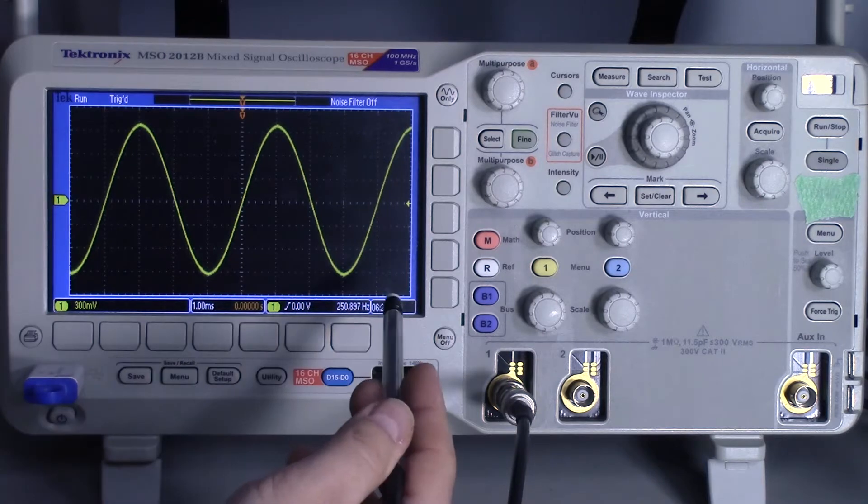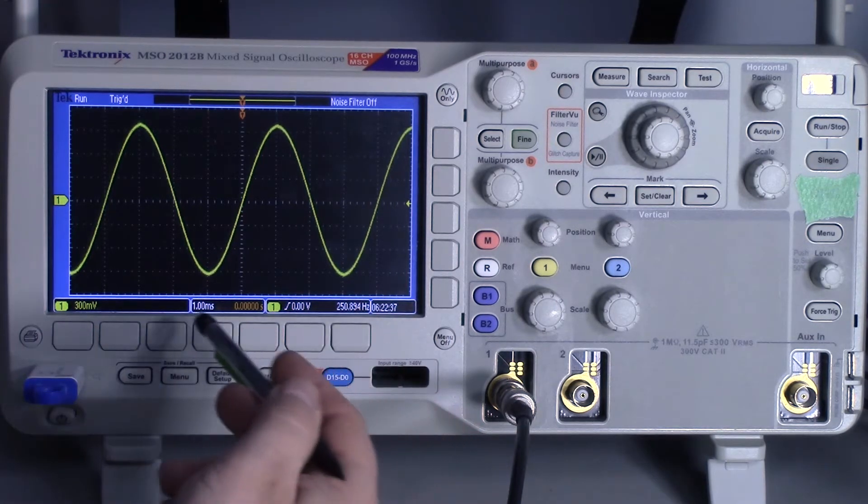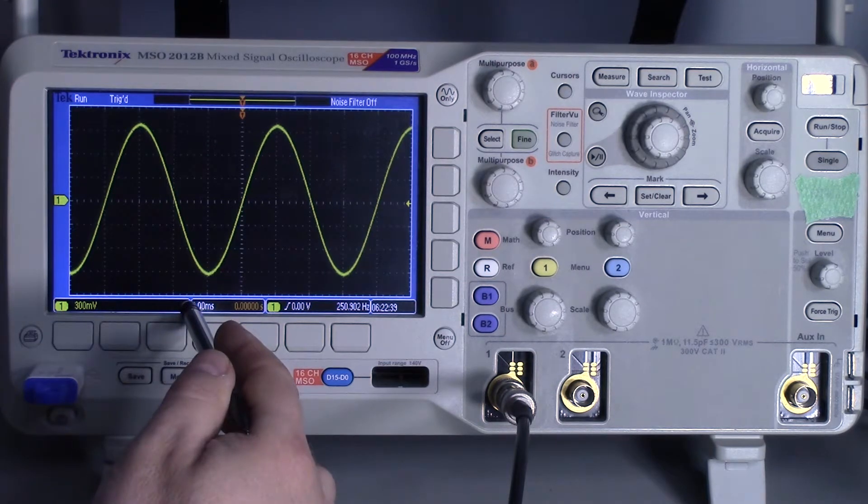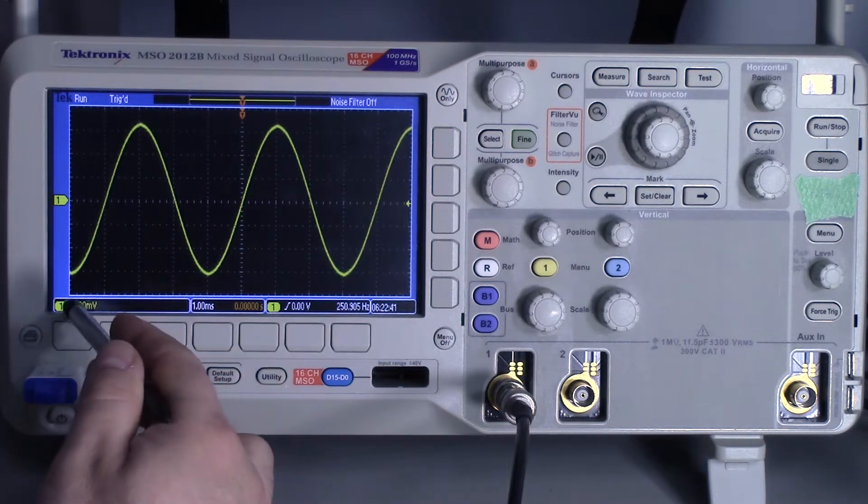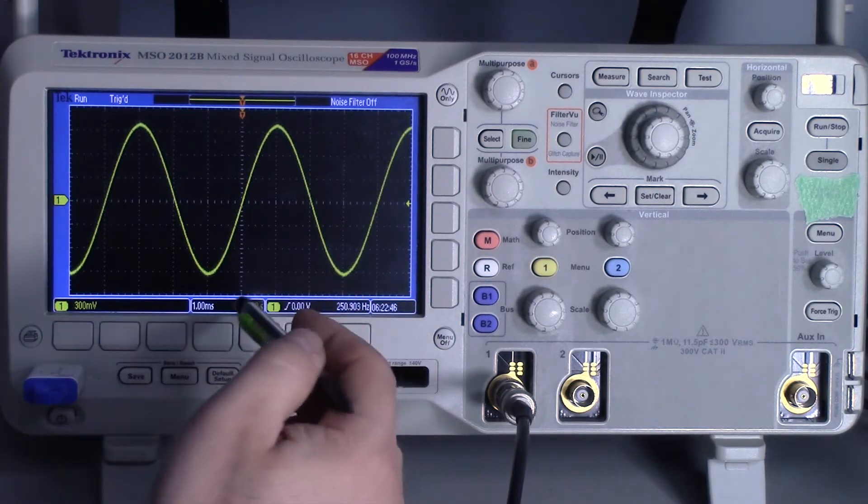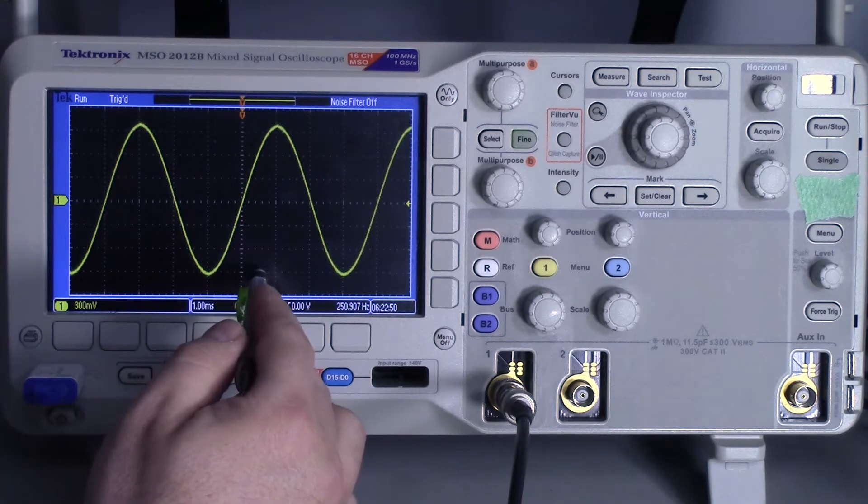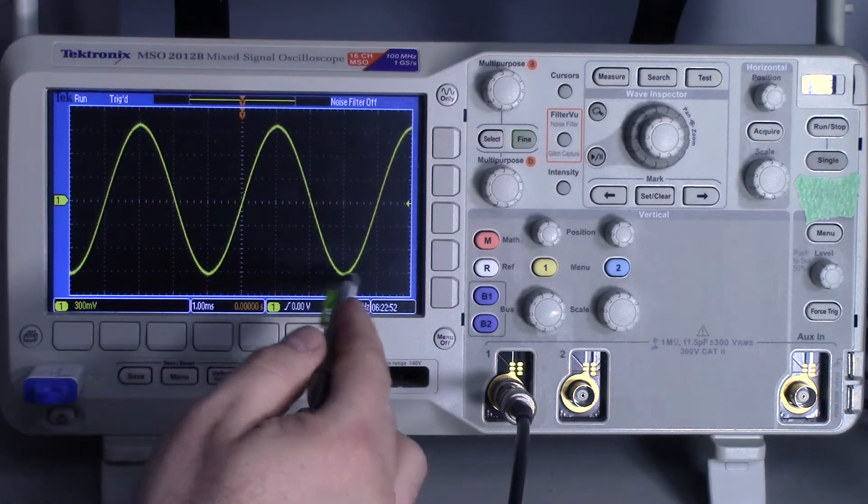So the simplest way to make a measurement from an oscilloscope, and this is true of older analog scopes, is to just look at what your scales are, what your vertical division and horizontal divisions are, and just do the math. So our horizontal scale is one millisecond, so for every graticule, every division is one millisecond.